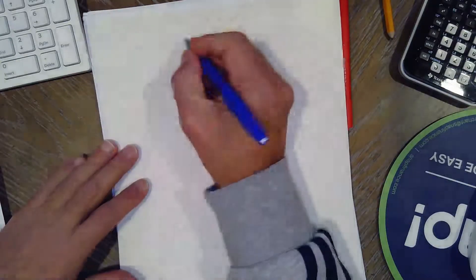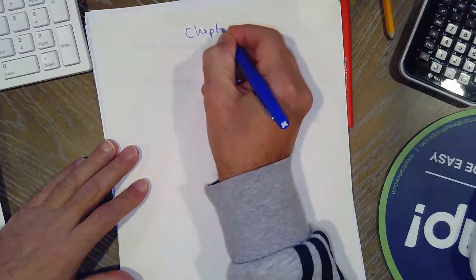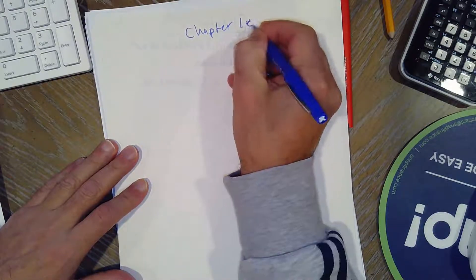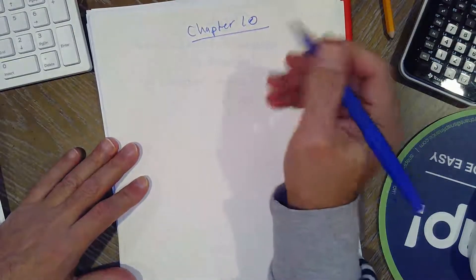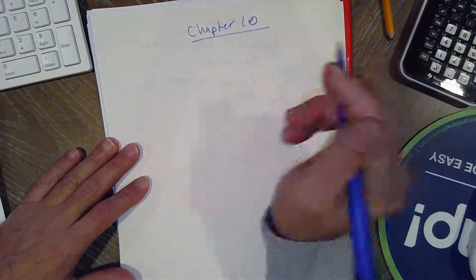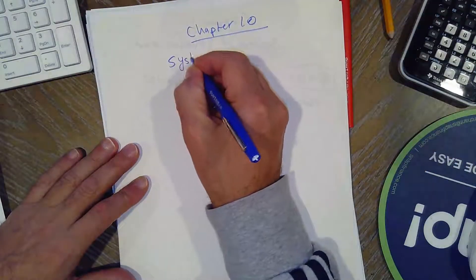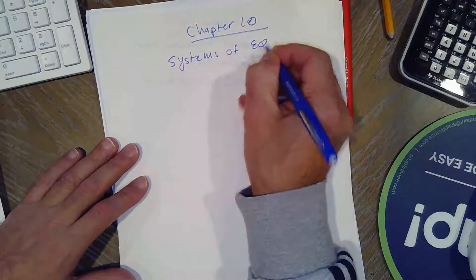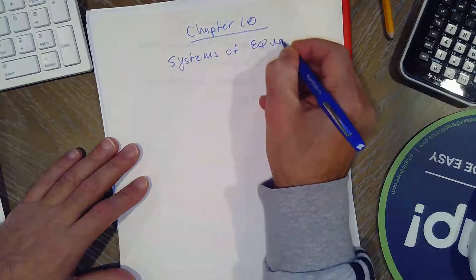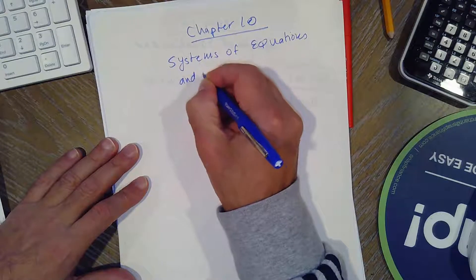Today I want to start chapter 10. After finishing chapter 4, we don't have to do chapters 5, 6, 7, 8, or 9. So systems of equations and inequalities.